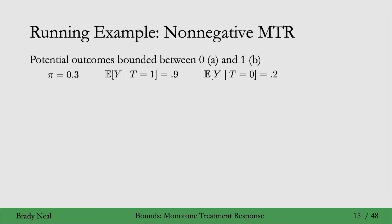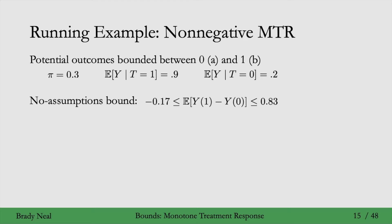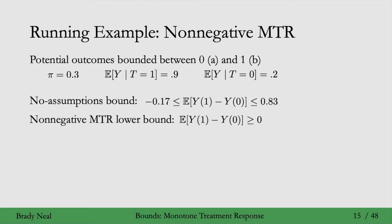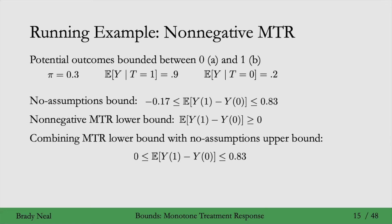Now that we have this bound, let's plug in the numbers from our running example. Here was the no-assumptions bound. Now that we've made the non-negative monotone treatment response assumption, we have a new lower bound. We can use this lower bound of 0 to make our interval smaller — changing the minus 0.17 to 0 — while keeping the upper bound from the no-assumptions case.